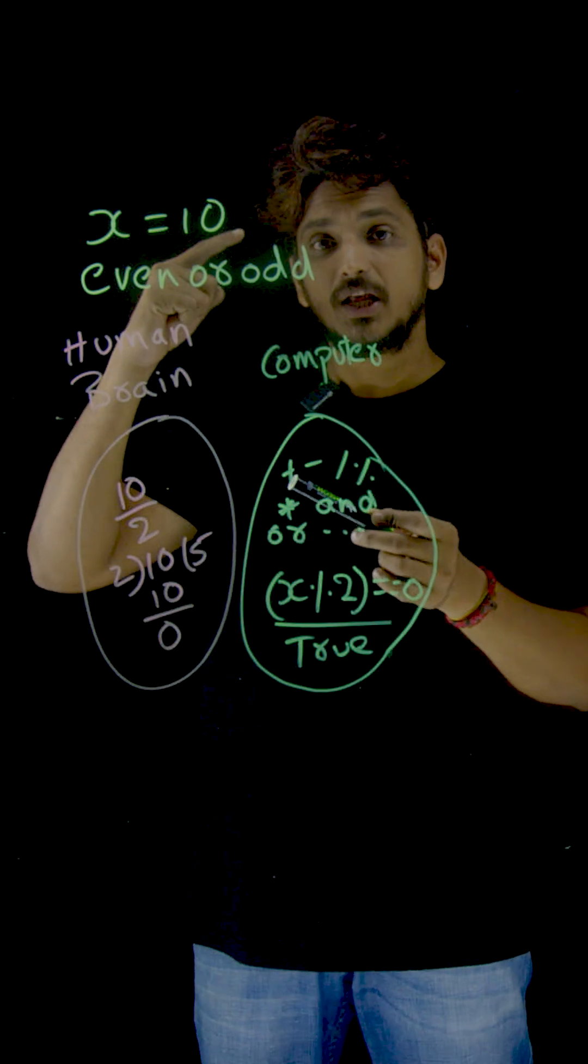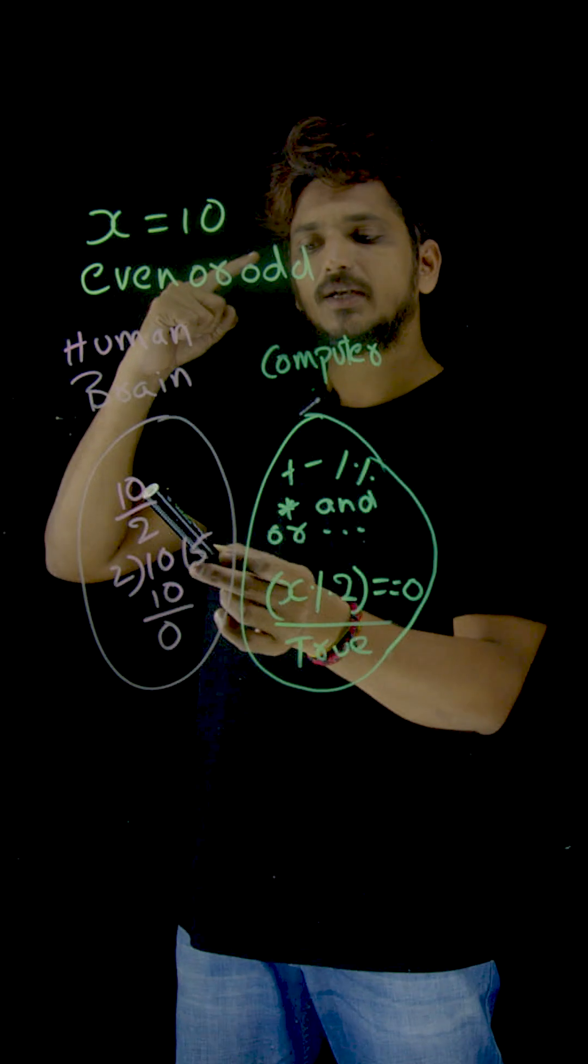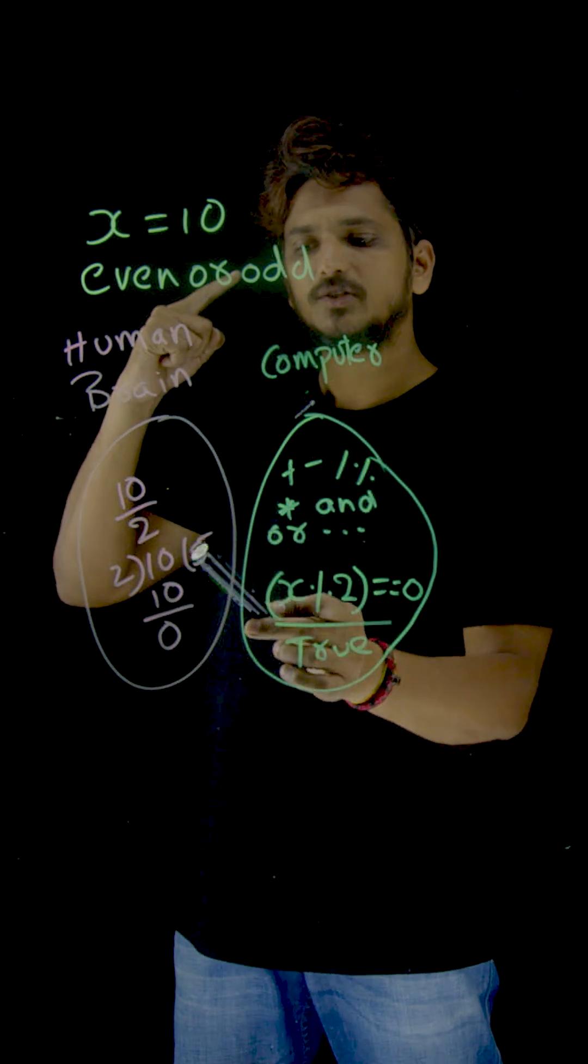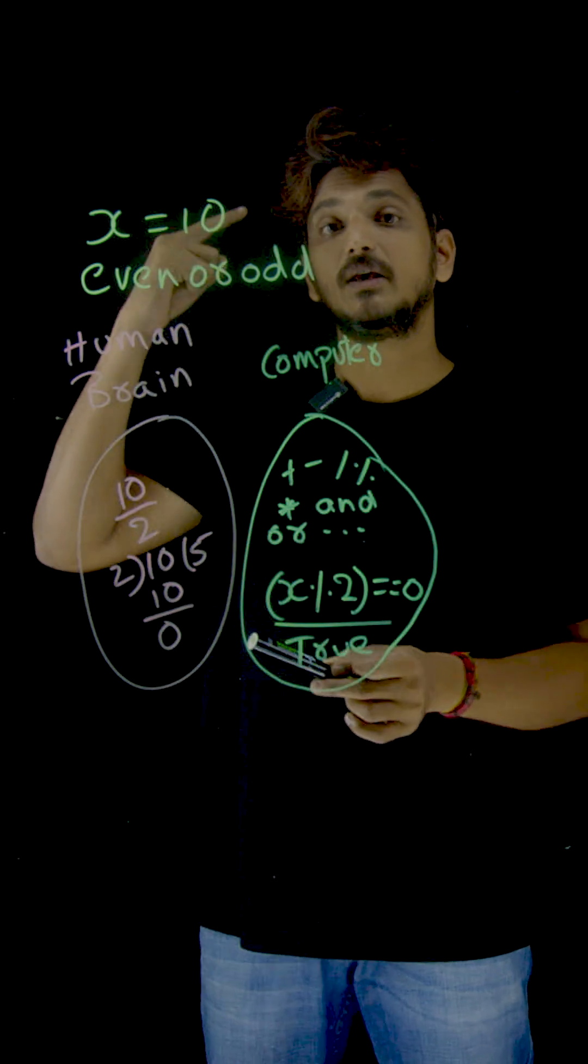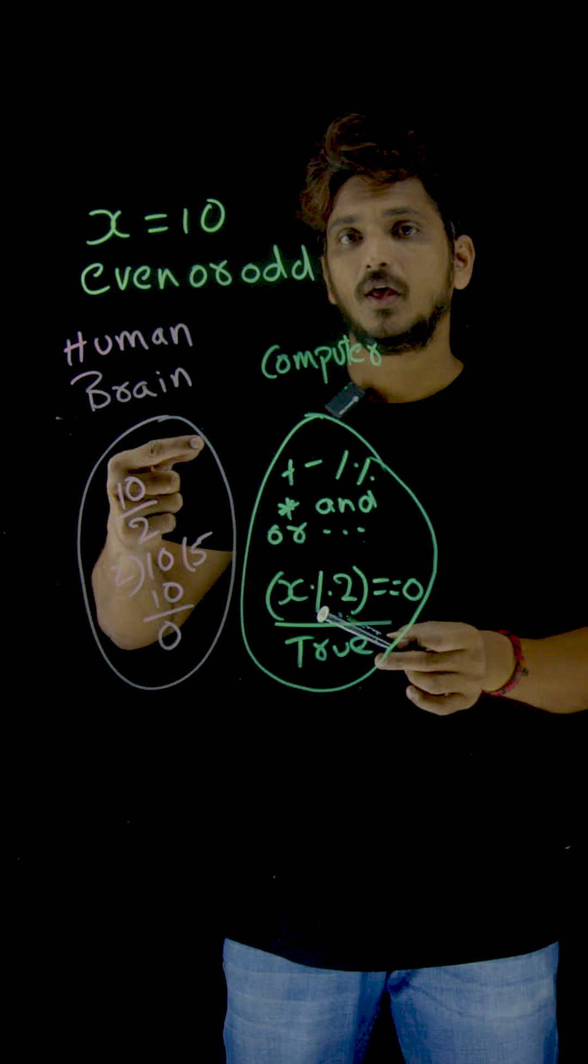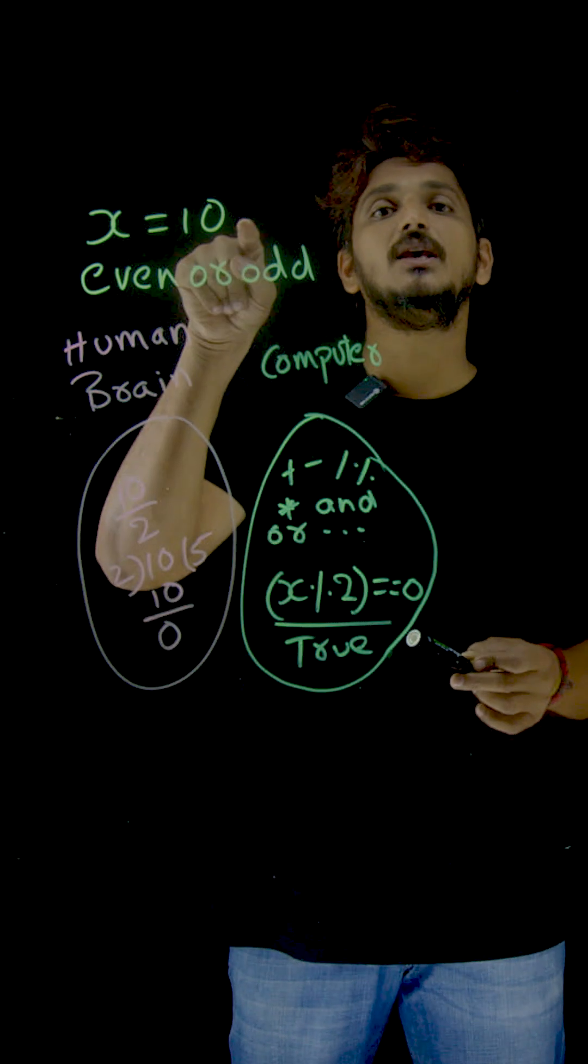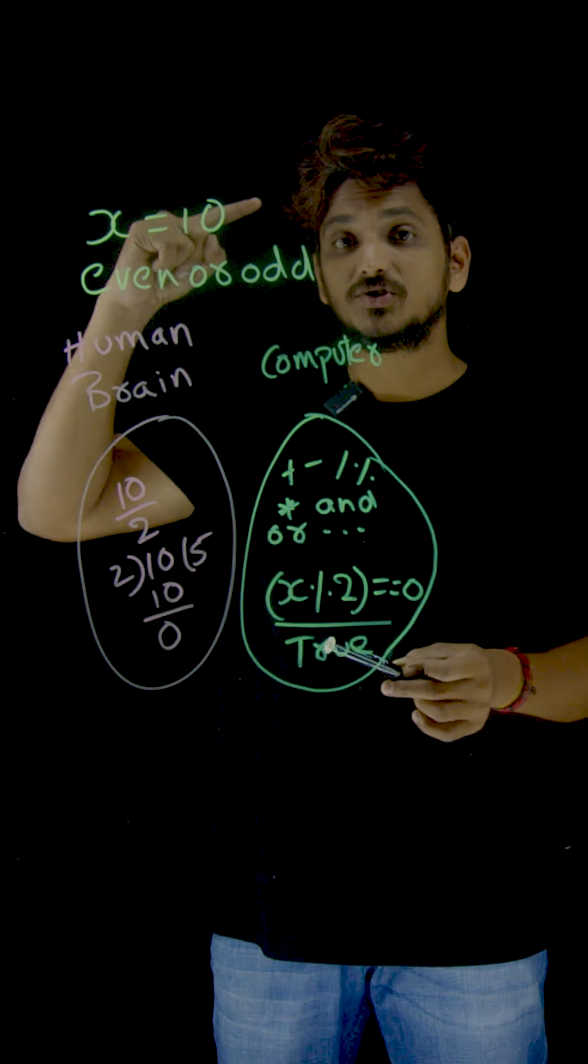This 10 - immediately your brain is going to calculate 10 divided by 2 equals 5, and the remainder is 0. If the remainder is 0, you can easily say that it's an even number. These calculations are done in your brain.